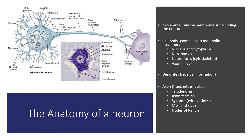Also on an axon, you might see what's called myelin sheath. Myelin sheath is very important because it results in faster propagation of a signal via what are known as nodes of Ranvier. At these nodes, the signal jumps from node to node rather than propagating along the entire length of the neuron, so the signal travels the length of the entire axon significantly faster.